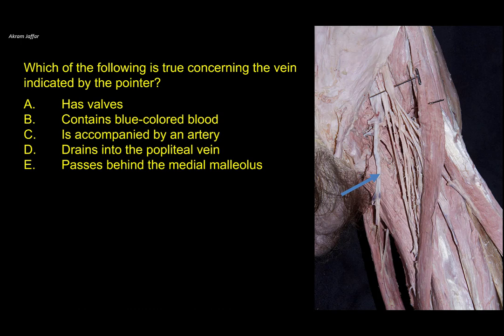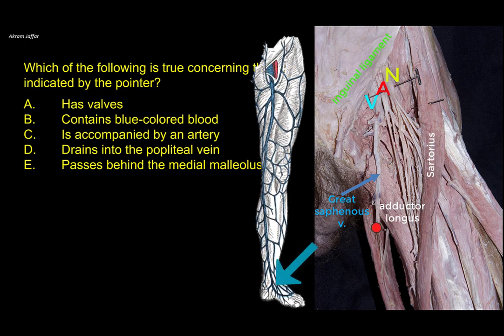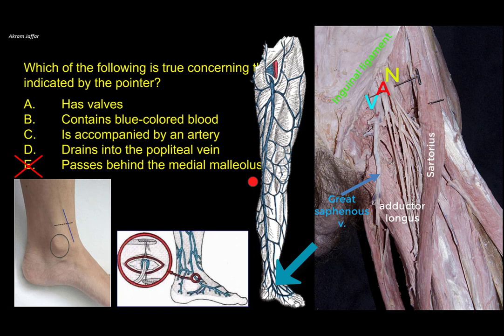Which of the following is true concerning the vein indicated by the pointer? This is the femoral triangle — you can see the inguinal ligament, adductor longus, sartorius muscle, femoral nerve laterally, then femoral artery, and then the femoral vein. And this is a superficial vein, the stump of a superficial vein, which pierces the deep fascia to drain into the femoral vein. This vein is the great saphenous vein. It starts as the upward continuation on the medial side of the dorsal venous arch of the foot, and it passes in front of the medial malleolus — not behind. This is an important site for venous cutdown: making an incision in the skin to pass an intravenous catheter, especially in collapsed patients in whom no superficial vein can be found.